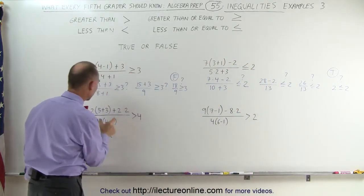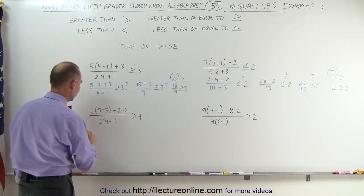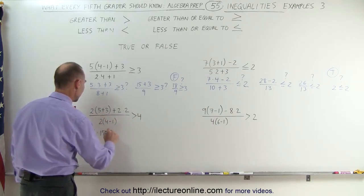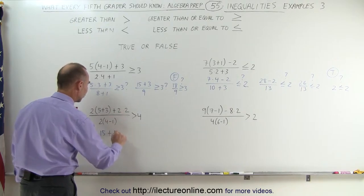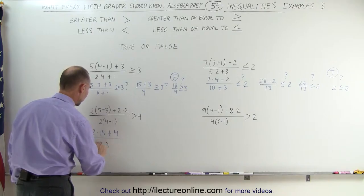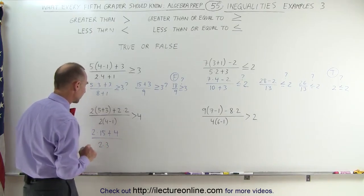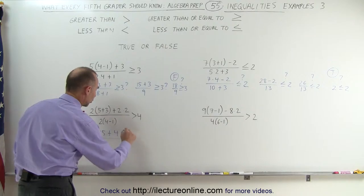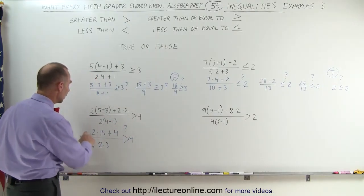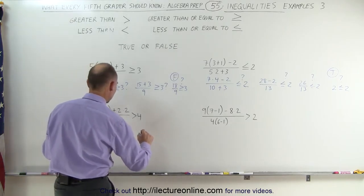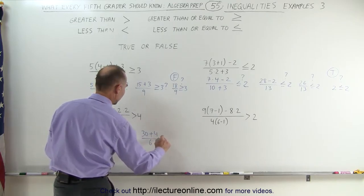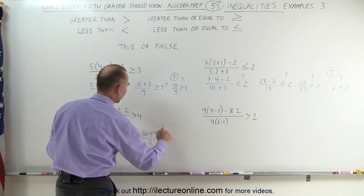For the third example, we need to work out what's in the parentheses first. This becomes 2 times (5 plus 3 which is 15) plus 2 times 2 which is 4, divided by 2 times (4 minus 1 which is 3). Is that greater than 4? We can't tell yet, so we'll multiply these out first. 2 times 15 is 30, plus 4, divided by 2 times 3 which is 6. Is that greater than 4?